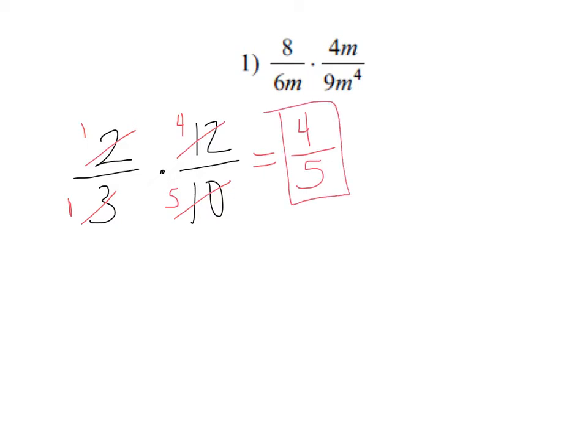Same deal even if we throw some variables in there. We're going to look to do some reducing and then multiply straight across. It isn't that important if you don't reduce first. You might come back at the end and reduce, so if you miss something, oftentimes you'll catch it in the end.